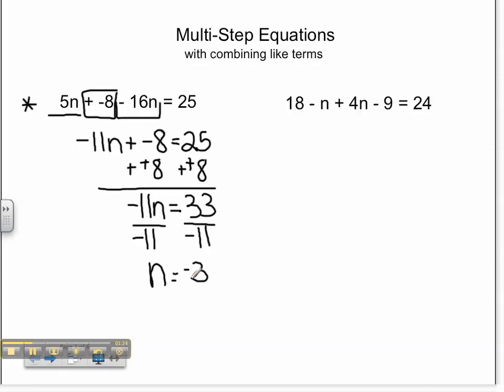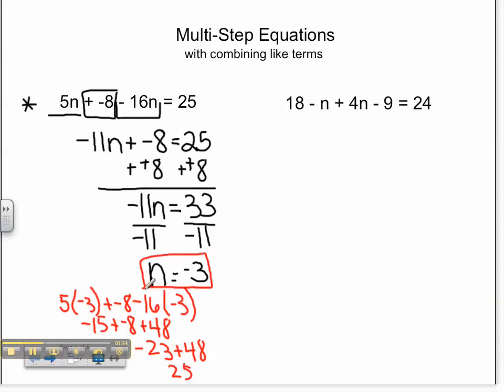We should then check our work in the original equation. 5 times negative 3 plus negative 8 minus 16 times negative 3. We get negative 15 plus negative 8 plus 48. Negative 15 plus negative 8 is negative 23, and negative 23 plus 48 is 25. Since that's the original solution to the equation, our solution of n equals negative 3 is correct.